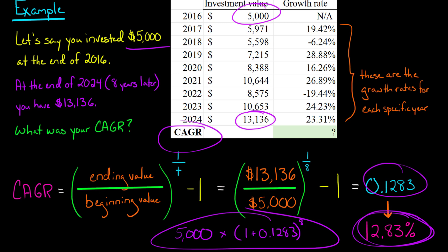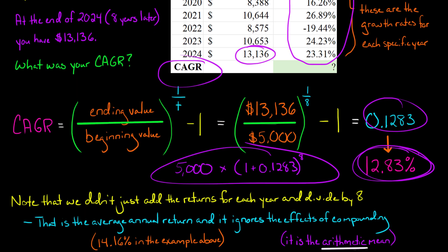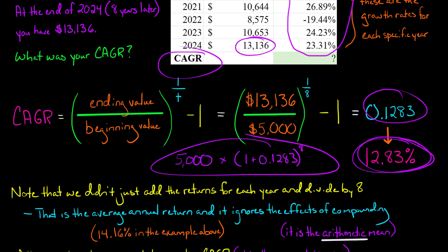Now, you might have been wondering, why don't we just take all these percentages here? This was the return for 2017, the return for 2018, 2019, et cetera. Why don't we just take them all and add them up and divide it by eight to get the average annual return? Well, you could do that, but if you do that, it's going to ignore the effects of compounding. I'm going to show why that will be a problem in a second.